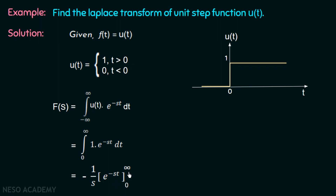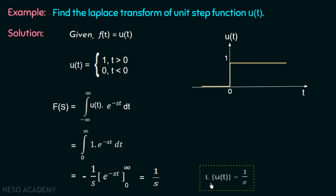Substituting the limits: e to the power minus infinity equals 0, and e to the power minus 0 equals 1, giving minus 1. So we have minus 1 over s multiplied by minus 1, which comes out to 1 over s. Finally, we have the Laplace domain of the unit step signal: L{u(t)} equals 1 over s.